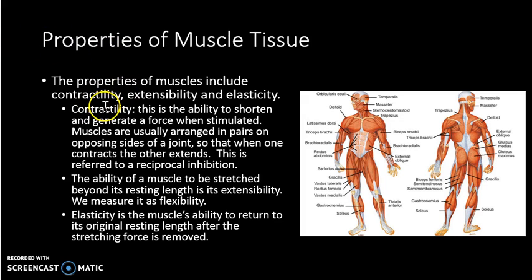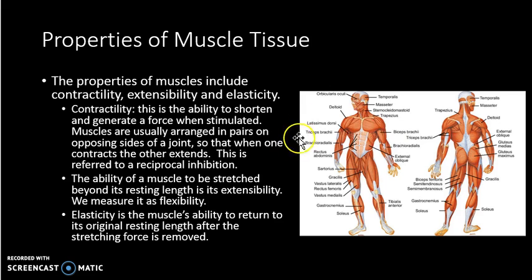The three key properties of muscle tissue are contractility, extensibility, and elasticity. Contractility is the ability to shorten and generate a force when stimulated. Muscles are normally arranged in pairs — the biceps with the triceps, the hamstrings with the quadriceps, or the pectorals with the upper back muscles. As one muscle contracts, its partner is slowly stretched, making joint movement more coordinated and less jerky. This is called reciprocal inhibition. Extensibility is the ability of a muscle to be stretched beyond its resting length, which increases the range of motion of a joint — the more extensibility your muscles have, the greater your range of motion.